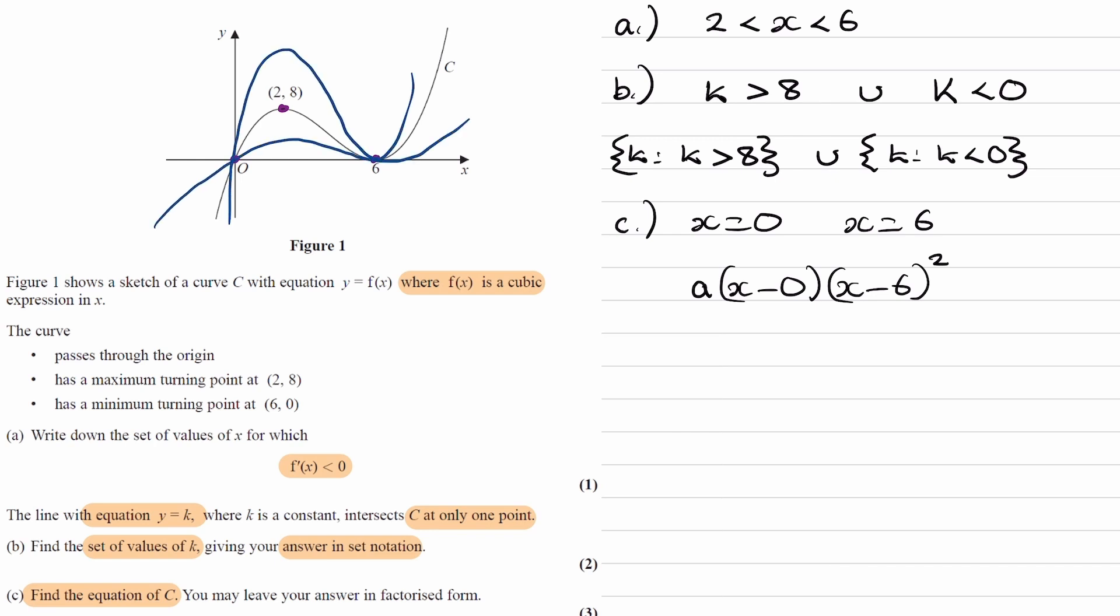And a stretch in the y direction could make our graph steeper, or it could make it shallower. And also, if our a value were negative, that could reflect the graph in the x-axis. So it could look like this. And again, all of those graphs have two roots, one at 0 and one repeated root at 6. So we need to work out what a is for our particular graph.